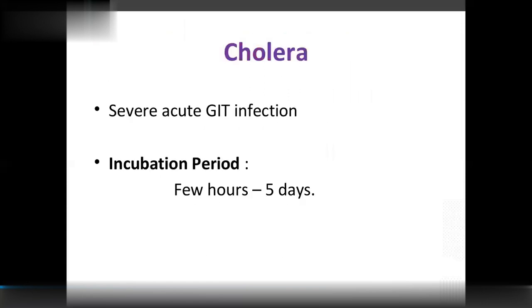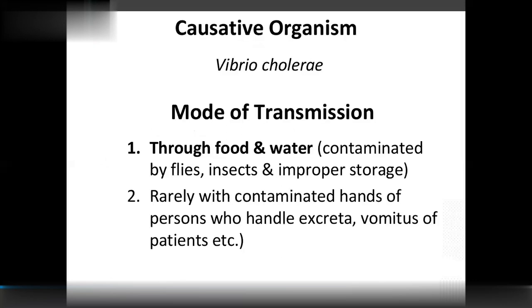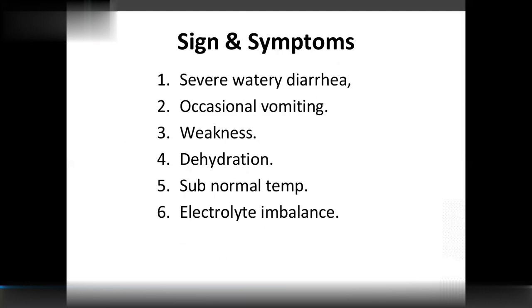Cholera is an acute GIT infection with an incubation period of 5 days, caused by Vibrio cholerae. Mode of transmission is through food and water contaminated by flies, insects, and improper storage, and rarely through contaminated hands of persons who handle the excreta and vomit of the patient, such as nurses. Signs and symptoms include severe watery diarrhea, occasional vomiting, weakness, dehydration, subnormal temperature, and electrolyte imbalance.